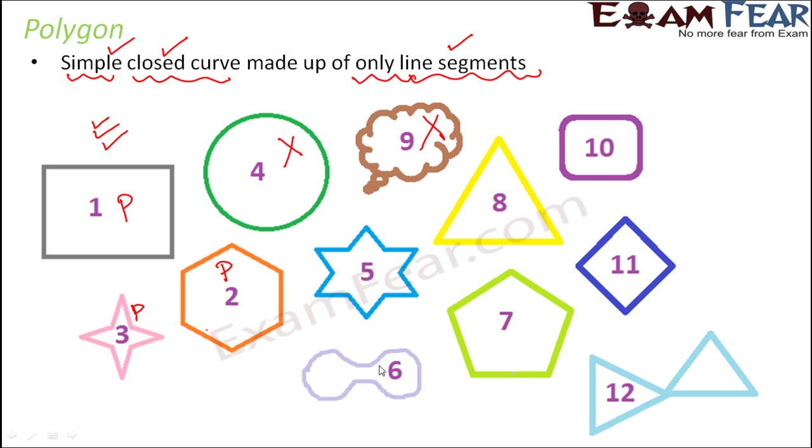If you look at number six, this one is also a closed curve, simple curve, but not made up of line segments. Therefore, this is not a polygon.